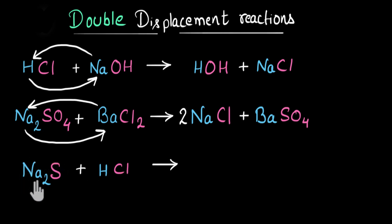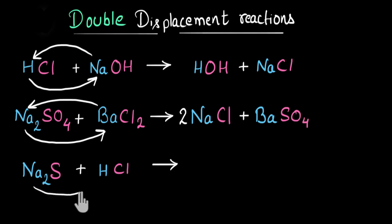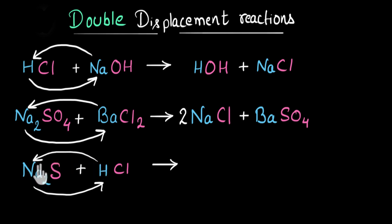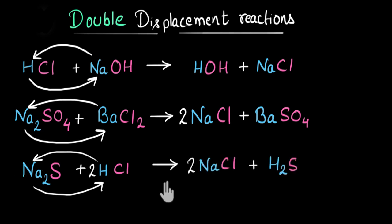Now let's look at this reaction. Here also double displacement, so ions exchange. Sodium takes the place of hydrogen and forms sodium chloride. And hydrogen in turn takes the place of sodium and forms hydrogen sulfide. So the product is going to be sodium chloride and hydrogen sulfide. With this, you understand the basic structure of double displacement reactions.